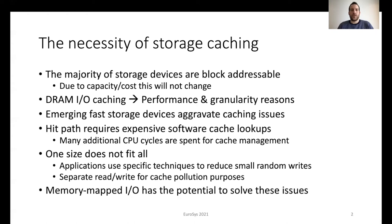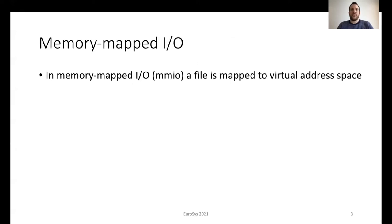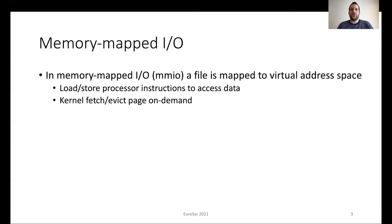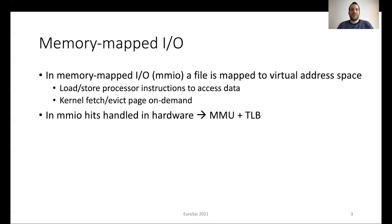Memory-mapped I/O has the potential to solve these issues. In memory-mapped I/O, a file or device is mapped to a process virtual address space. Applications can use load/store instructions in order to access data. In this case, the kernel is responsible to fetch and evict pages on demand. Hits are handled entirely in hardware through the memory management unit and the TLB. In the case of a TLB miss, an additional page table walk is also required. As hits are handled entirely in hardware, this provides lower overheads compared to software cache lookups.